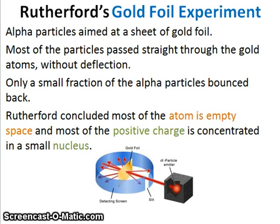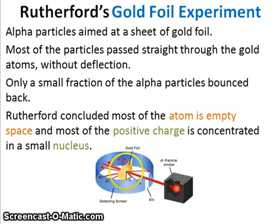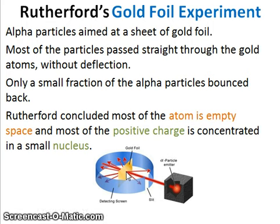With the previous model of the atom — the one proposed by JJ Thomson — we would expect all the particles to pass through. We would not expect there to be a small, very dense mass that would actually deflect the particles. So these observations led to Rutherford creating a new model of the atom in 1911, where there was a small charged nucleus inside the atom, the mass of the atom was mostly concentrated in this nucleus, and the rest was empty space.